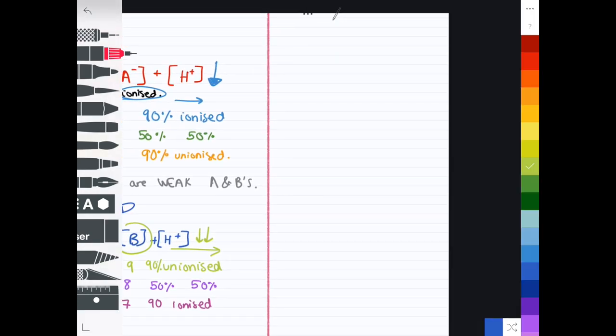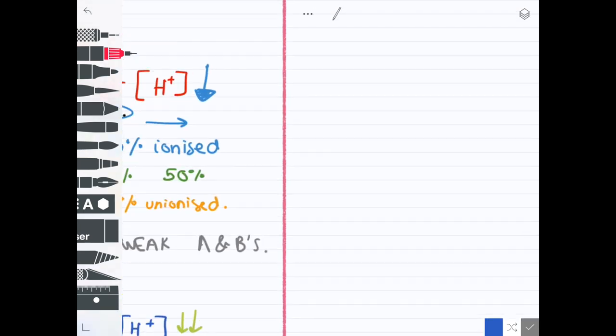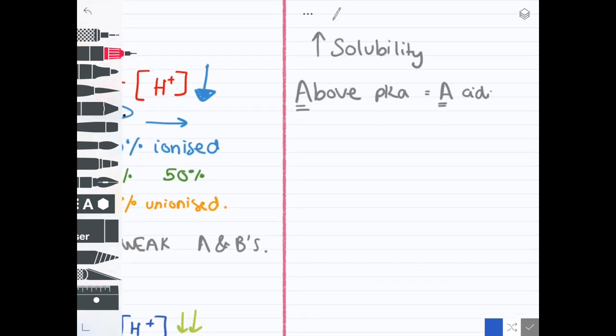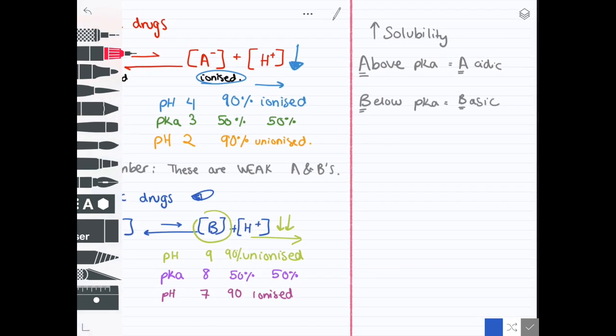Remember, to increase solubility is above pKa for acidic drugs and below pKa for basic drugs, AABB. Always correlate ionized means soluble, unionized means unsoluble.